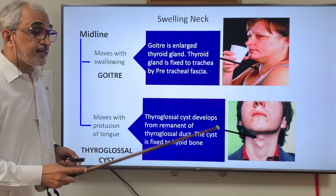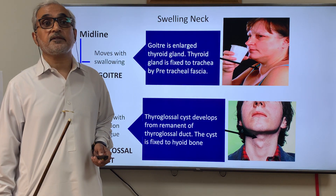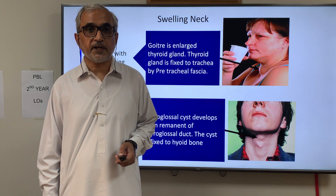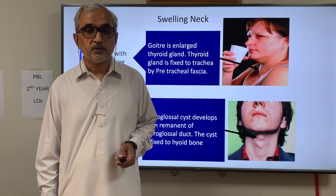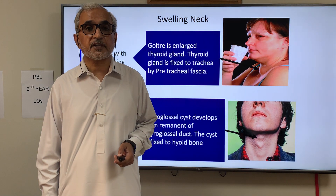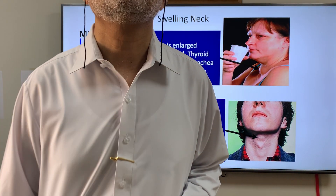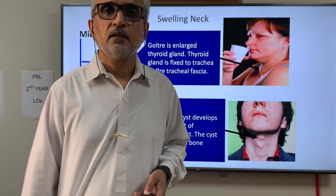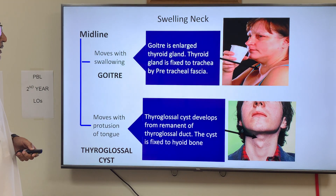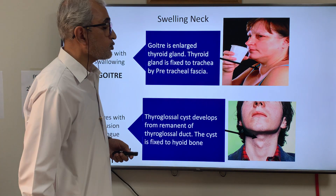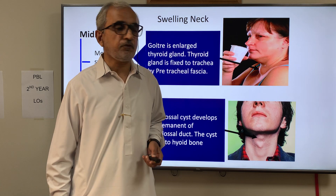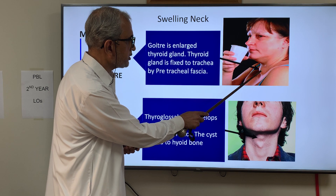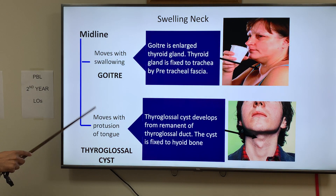A goiter is the name given to an enlarged thyroid gland. The thyroid gland is fixed to the trachea by the pre-tracheal fascia. That is why when one swallows, the trachea moves and it moves the thyroid attached to it. You have to ask the patient to swallow — it is much easier to ask them to take a sip of water. A midline swelling that moves with swallowing is a goiter.